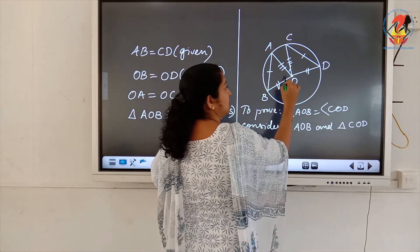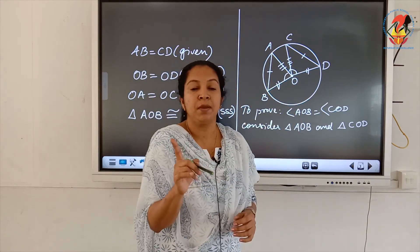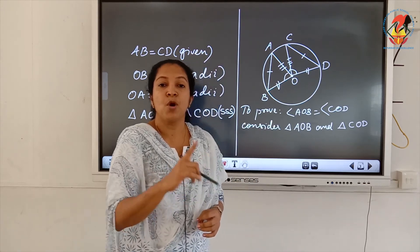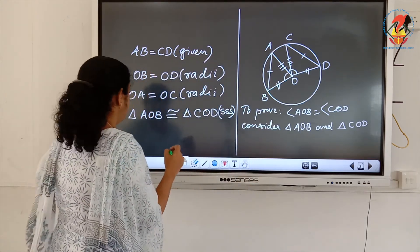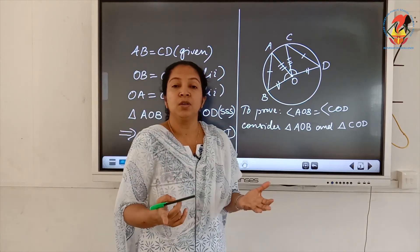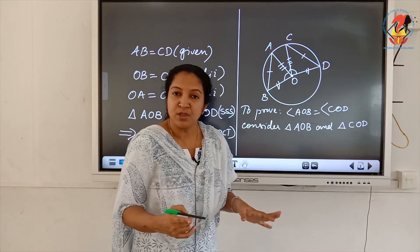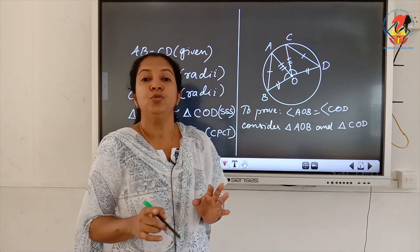Therefore, triangle AOB is congruent to triangle COD by the SSS criterion. So angle AOB equals angle COD by CPCT. Hence, equal chords subtend equal angles at the center. This is the first theorem — you must learn its proof.